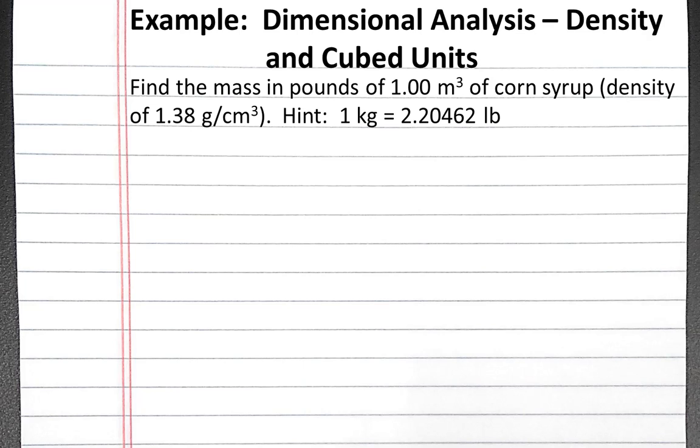In this example, we'll use dimensional analysis to solve a problem involving density and cubed units. Our problem states: find the mass in pounds of 1 meter cubed of corn syrup whose density is 1.38 grams per centimeter cubed. We're given the hint that 1 kilogram equals 2.20462 pounds.